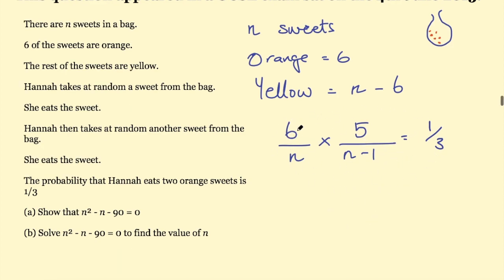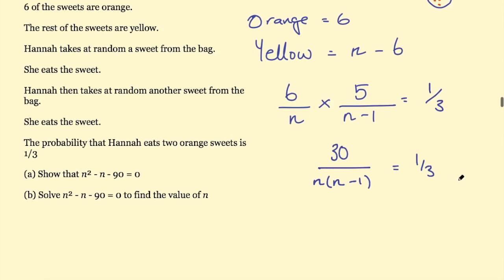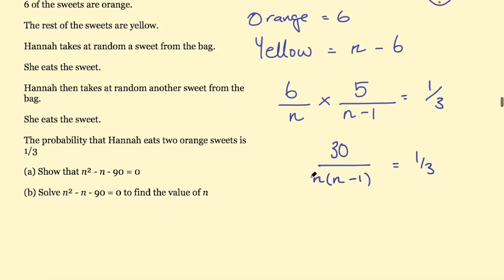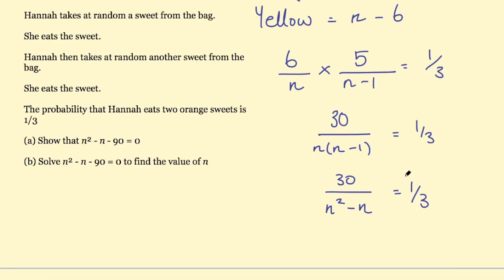Now I work with this equation. On the left-hand side, six times five is 30 on the numerator, and n times (n minus one) on the denominator. So I have 30 over n(n minus 1) equals one third. Expanding the bracket gives 30 over (n squared minus n) equals one third. Now I have two fractions equal to each other and I want to get rid of the fractions.